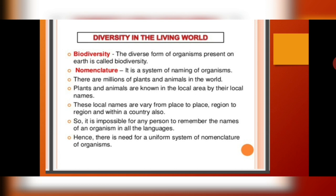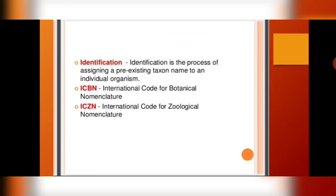Just like 1 kg of sugar in India is absolutely equal to 1 kg of sugar in the US — because there are certain rules of measurement — similarly, there are rules for nomenclature as well. The first step to nomenclature is identification: the process of assigning a pre-existing taxon. A taxon is a category. One taxon name has to be given to each organism that is discovered. Nomenclature, identification, and classification of various organisms is governed by two international organizations.